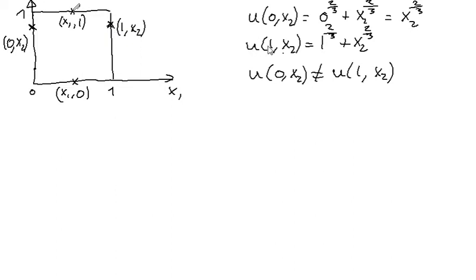Let's do the same here. u(1,x₂) is, when we are replacing x₁ with this constant value 1, we obtain 1 + x₂^(2/3). And already here, we can conclude that these two values are not equal. Since they are not equal—it's no way that this value can be equal to the same value plus 1—since these values are not equal, we conclude that the function is not a member of W_periodic.